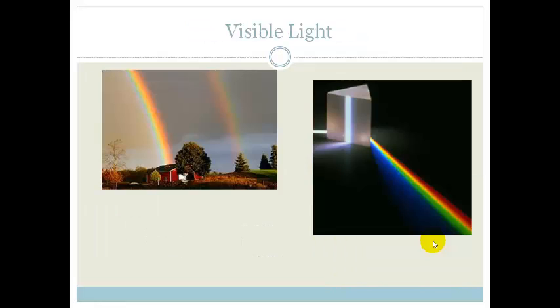Visible light — we know about visible light and we use it every day. What you need to know about visible light is that when it is sent through a prism, it breaks up into its component colors, which are red, orange, yellow, green, blue, indigo, and violet.